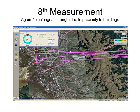The eighth measurement again confirms the direction to the target. As with the previous measurement, the signal strength is relatively low due to buildings between the vehicle and the target emitter. But in this case, as the measurement happened to be taken at the edge of the building, the system was able to determine a good direction to the emitter.